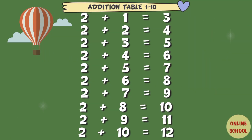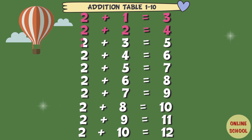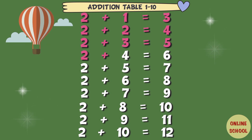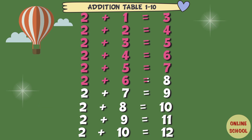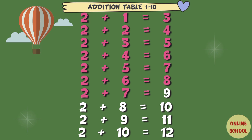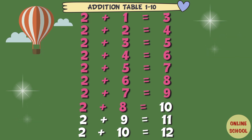Table 2: 2 plus 1 equal 3, 2 plus 2 equal 4, 2 plus 3 equal 5, 2 plus 4 equal 6, 2 plus 5 equal 7, 2 plus 6 equal 8, 2 plus 7 equal 9, 2 plus 8 equal 10.